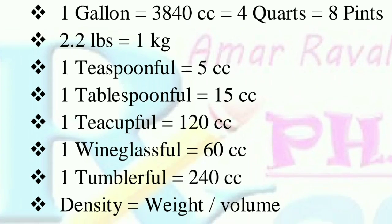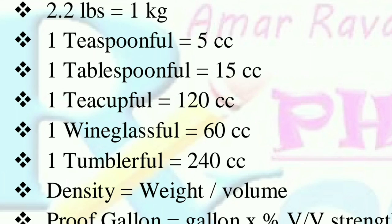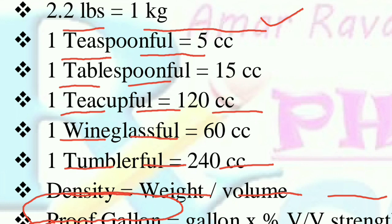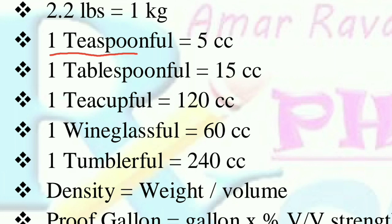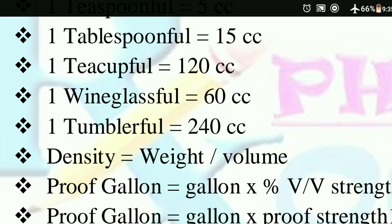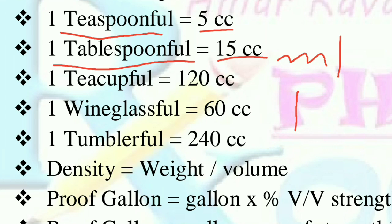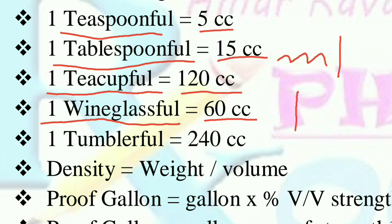Next, we go to household measure conversions. One teaspoon full is equal to 5 cc or 5 ml. One tablespoon full is equal to 15 cc or 15 ml. One teaspoon full (wine glass) is equal to 120 ml. One wine glass full is equal to 60 ml. One tumbler full is equal to 240 ml. You can consider cc and ml interchangeably here.